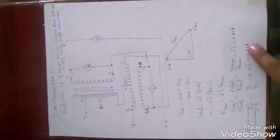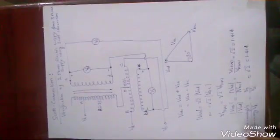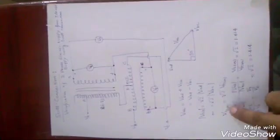Because in two-phase supply, the relationship between the line voltage and phase voltage is root 2. Line voltage is root 2 times the phase voltage.